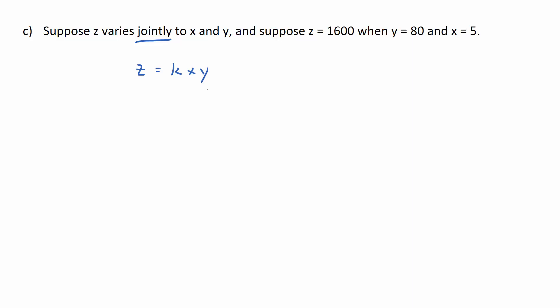So we're going to plug and chug what we know and use that information to find k. So we're going to plug in 1600 for z. Okay, we'll stay k until we find it. We'll plug in x equals 5 and y equals 80. And we solve for k to find the constant of variation.